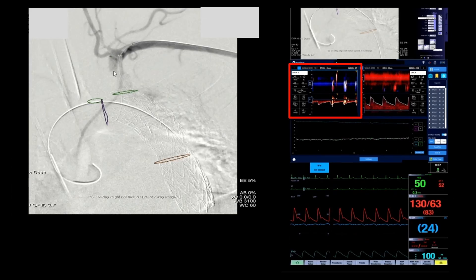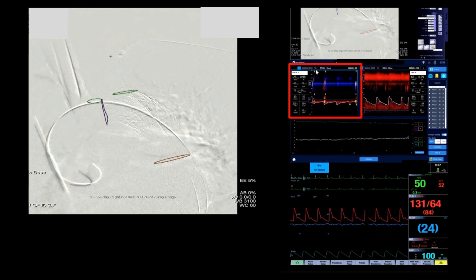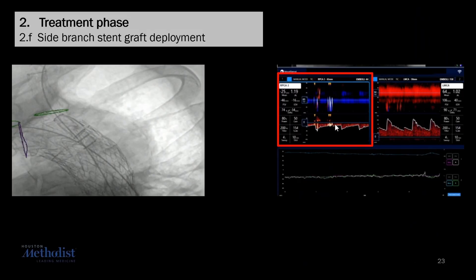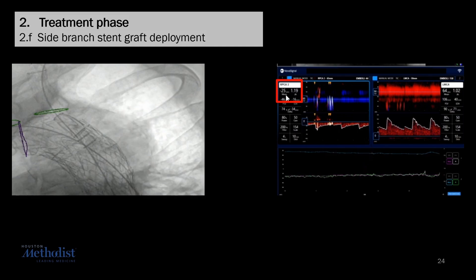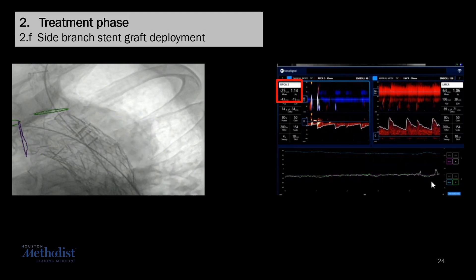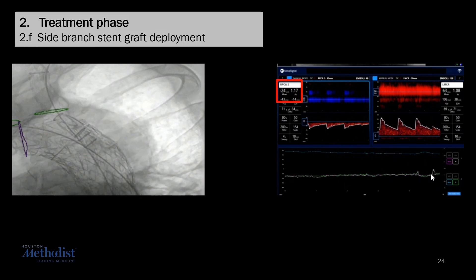Selective angiogram of the left subclavian artery was performed before the deployment of the side branch stent graft to visualize the orifice of the left vertebral artery. Hits are seen only in the right PCA, which is proof that we were indeed monitoring the right posterior cerebral artery. The deployment of the left subclavian side branch stent graft is causing some hits in the right posterior cerebral artery. No significant change in blood flow was seen, meaning the left vertebral artery was not covered. However, on the timescale, we can see some slight elevation in the PI values bilaterally during the deployment.